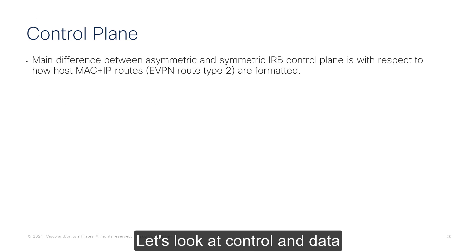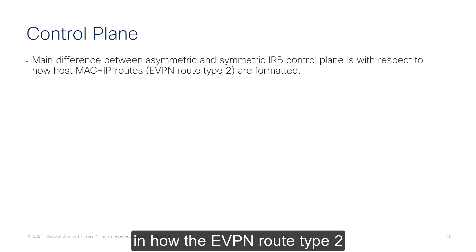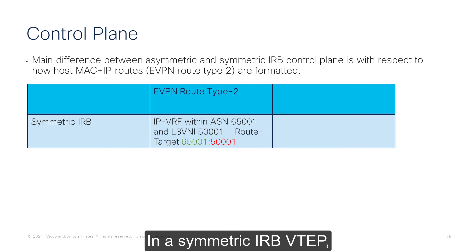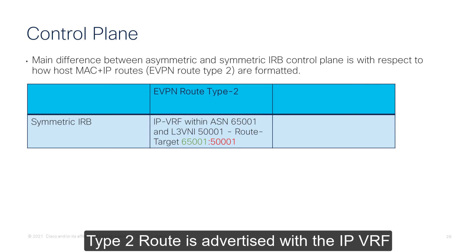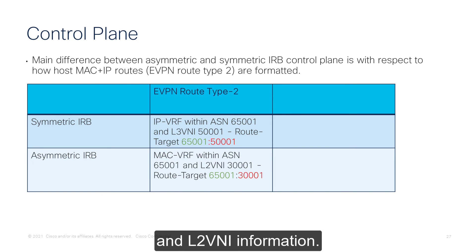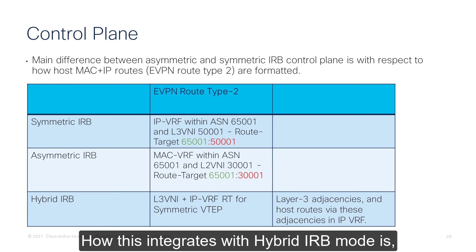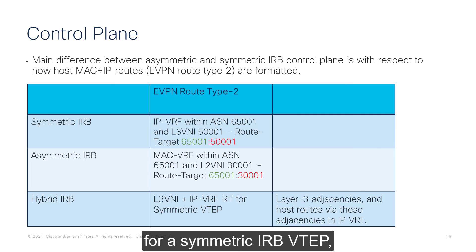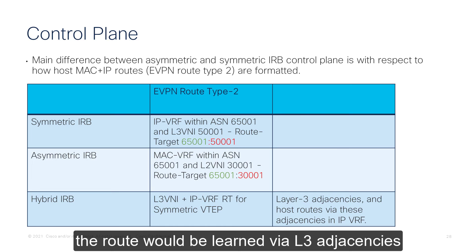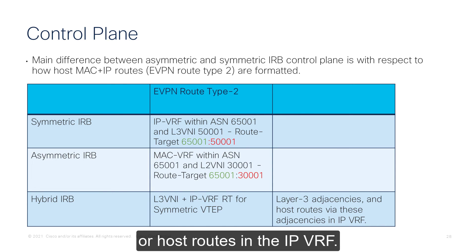Let's look at the control and data plane for hybrid mode. The main difference lies in how EVPN route type 2, or MAC-IP routes, are advertised. In a symmetric IRB VTEP, the type 2 route is advertised with the IP-VRF and L3VNI information. In an asymmetric IRB VTEP, the type 2 route is advertised with the MAC-VRF and L2VNI information. For a hybrid IRB VTEP, the type 2 route is still learnt through L3VNI plus IP-VRF, while for symmetric VTEPs the routes are learnt via L3 adjacencies or host routes in the IP-VRF.